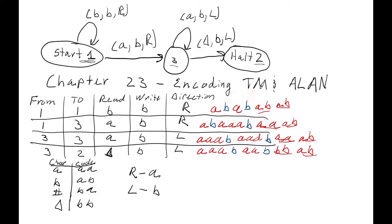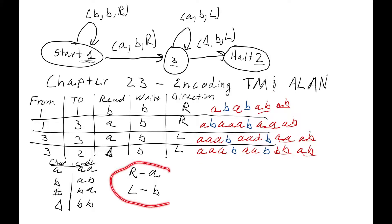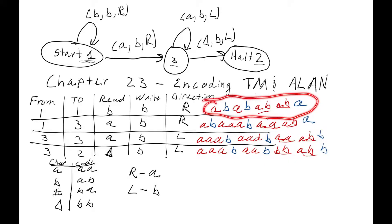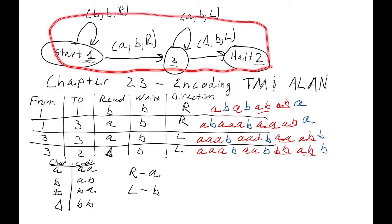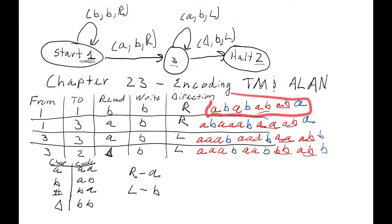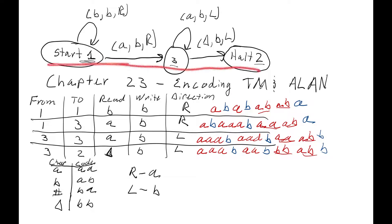We don't need a separator between characters because we know that each character will just be two letters on our tape. Finally, we need to know whether we move our tape head to the right or to the left. If we're going to move it right, we write an A. If we're going to move it to the left, we write a B. So now we have one string of A's and B's that represents one row in this table. To come up with the code for the entire Turing machine, all we need to do is list out each row one right after another, and then we have the code for this Turing machine.